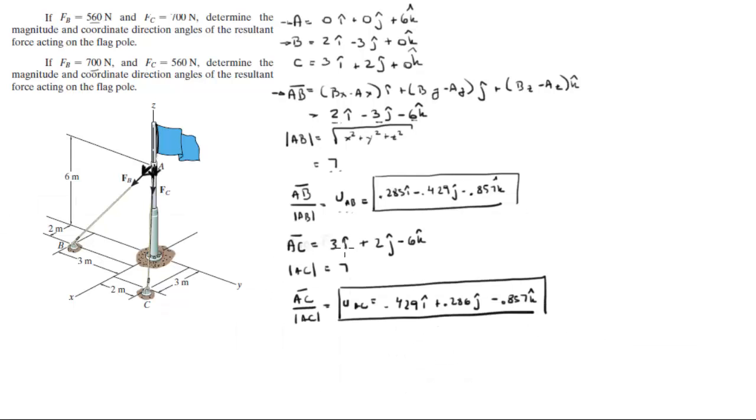So now that we have the two unit vectors, both problems become very easy. So let me do this problem first. Let's call this problem problem 2. So for one, F of B is equal to the magnitude of F of B, which is given right here, times the unit vector AB, this vector right here. And by multiplying the 560 N by each of the values, you get this new vector. Comes out to be 160i minus 240j minus 480k.